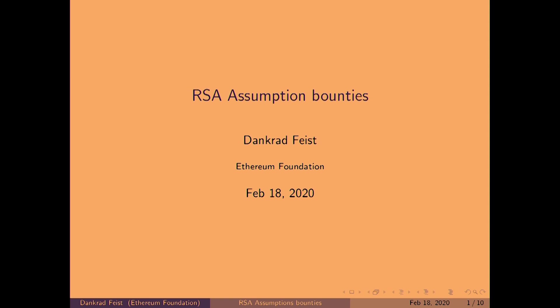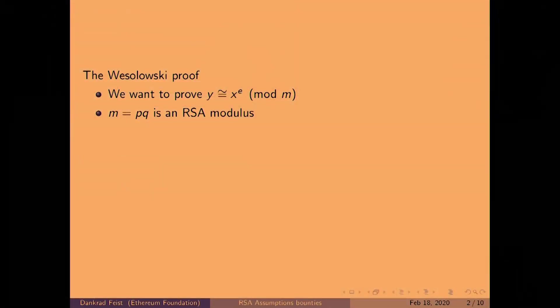I would like to introduce some bounties we have introduced at DF for breaking the RSA assumptions and testing that they hold. Let's go back to the Wesolowski proof — we've already seen it a couple of times today. It's a proof of exponentiation. We want to prove that y equals x to the power of e modulo some RSA modulus m.